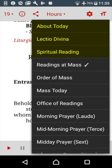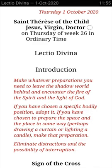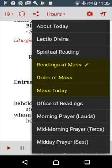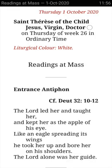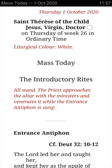The first part of the menu has pages that are not part of any particular liturgy. About Today tells you about the saints of the day. Lectio Divina gives you a special way of praying the Gospel alone or in company. Spiritual Reading gives you all the non-biblical readings for the day. The second part has the Mass — the readings at Mass with or without the prayers, the order of Mass, and Mass Today, which combines them both.